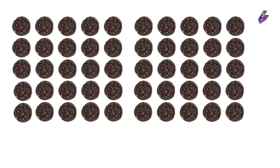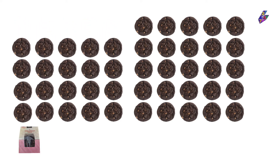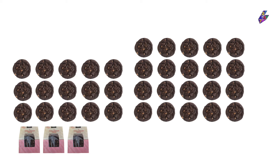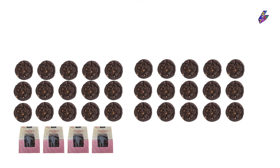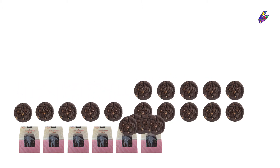Let's have a look at the first strategy. We know that one bag needs five cookies, so one way we could have done this is count in fives until we've used up all the cookies, keeping track of the number of bags as we go. Five cookies makes one bag, ten makes two, fifteen makes three, twenty makes four, twenty-five makes five, thirty makes six, thirty-five makes seven, forty makes eight, forty-five makes nine, and fifty cookies makes ten bags.